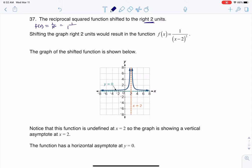So if I want to go 2 units right, I need to put a 2 in this position, and that's where you see my reciprocal squared function shifted 2 units right.